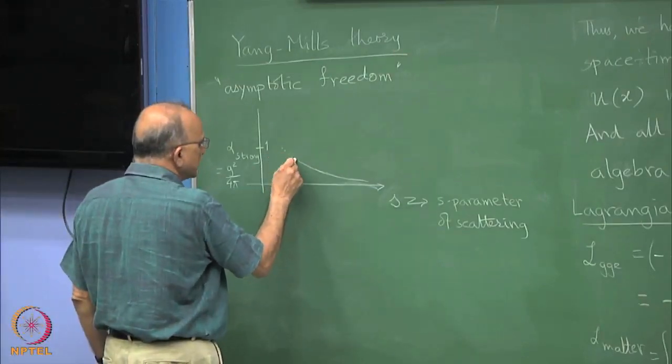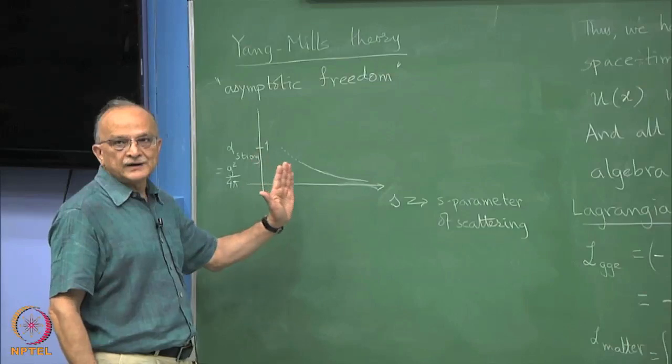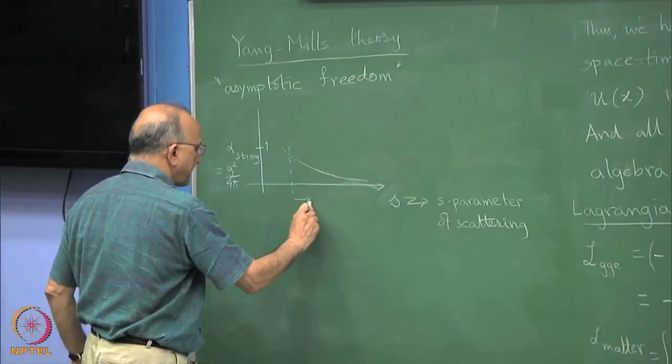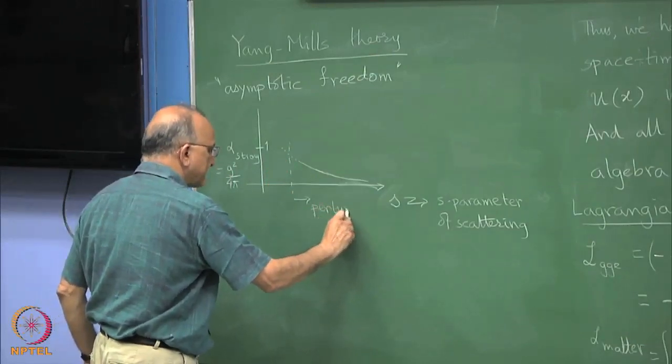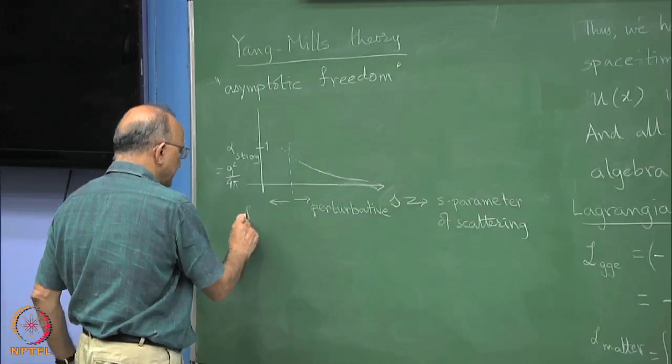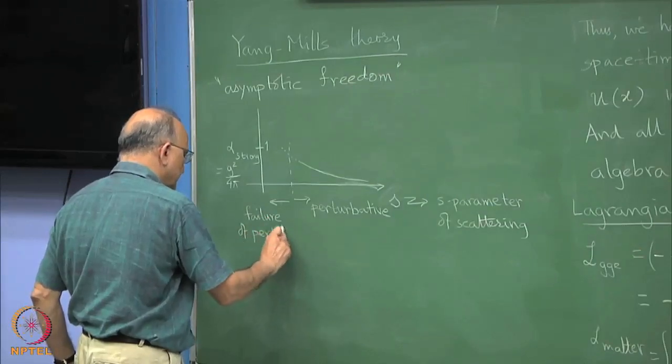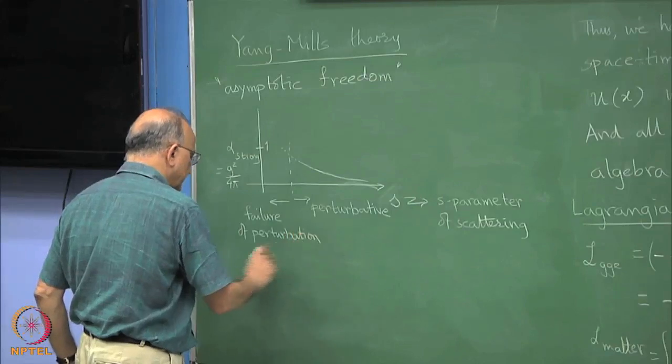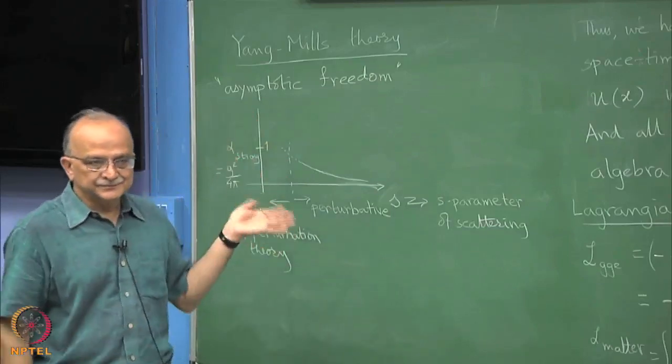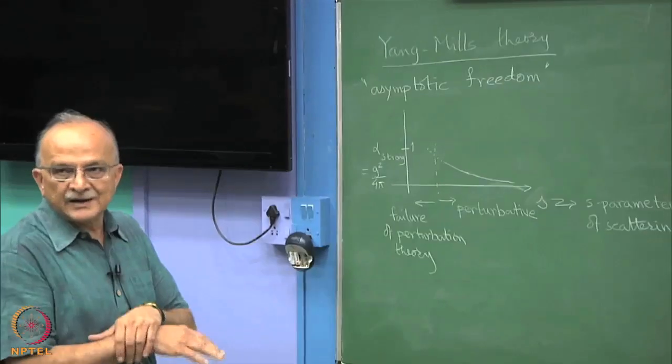But then you can only put dotted lines here because here perturbation theory begins to fail. If it grows towards 1, then the perturbation theory fails. We do not really know what happens here. Once it approaches 1, we do not know whether it becomes 1. In fact it becomes meaningless because now you cannot separate anything.